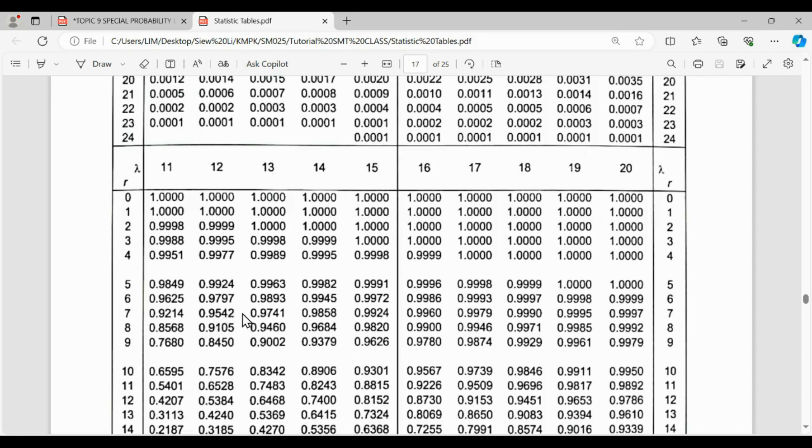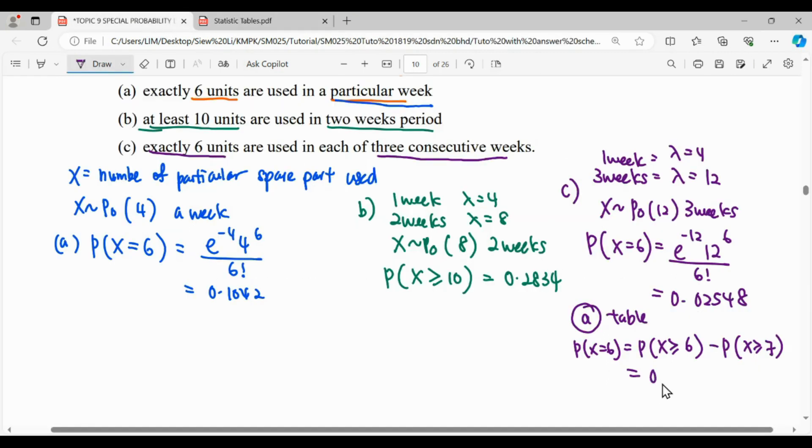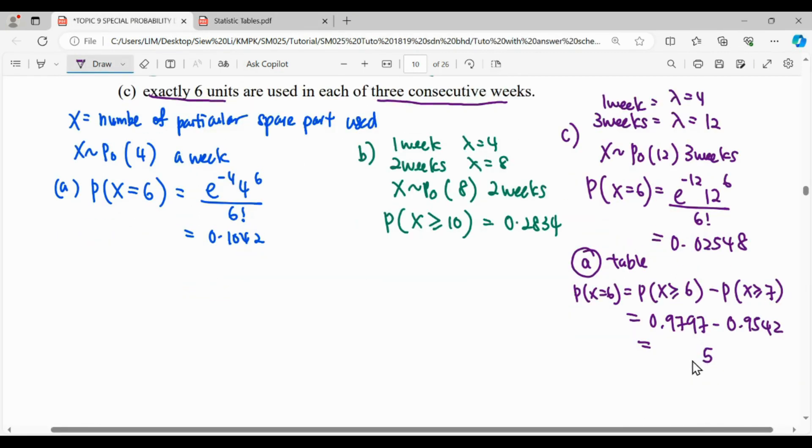The readings are 0.9797 and 0.9542, so we get 0.9797 minus 0.9542 equals 0.0255. So that's all for this question. Thanks for watching.